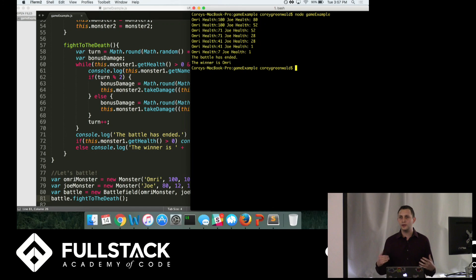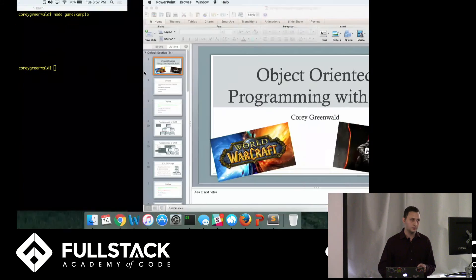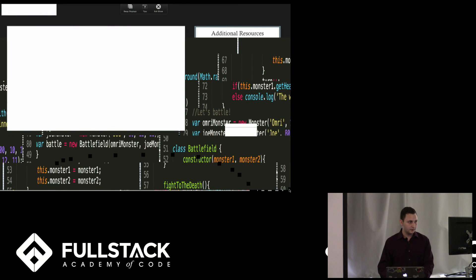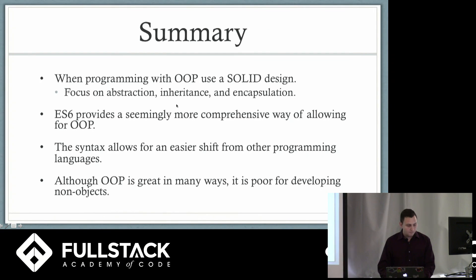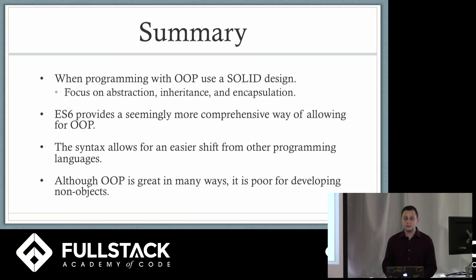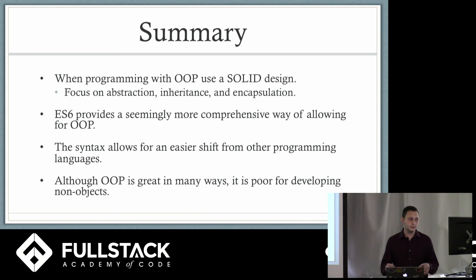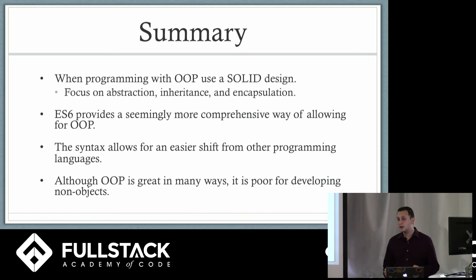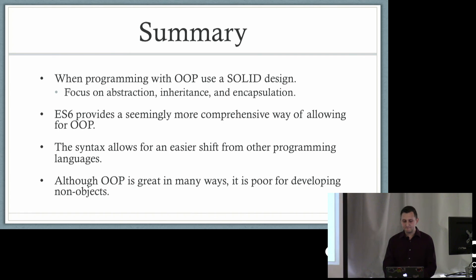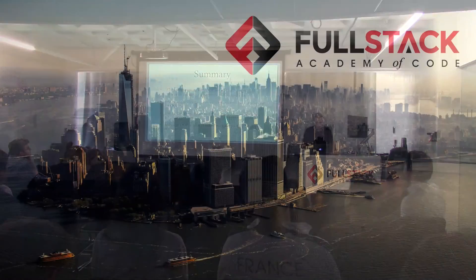To summarize: when programming with OOP, use a solid design and focus on abstraction, inheritance, and encapsulation. ES6 provides a more comprehensive and readable way to do this, and the syntax allows for an easier shift from other programming languages — getting out of the OOP mindset was one of my hardest difficulties switching to JavaScript. Although OOP is great in many ways, it is poor for developing non-objects, so keep that in mind when using it. Thank you guys for your time — any questions?